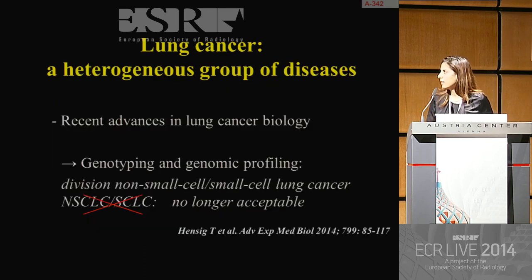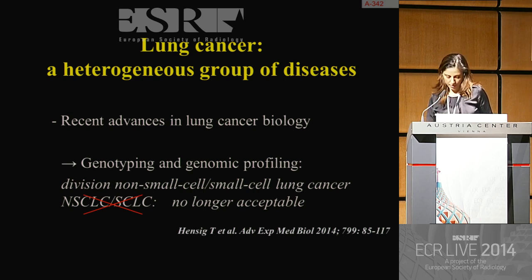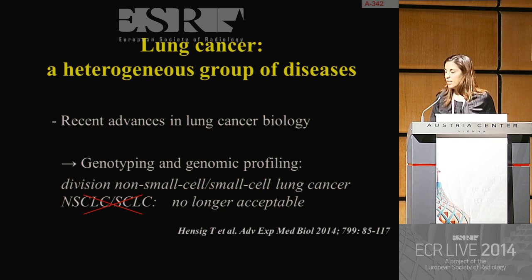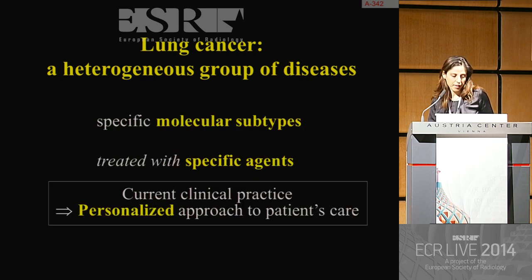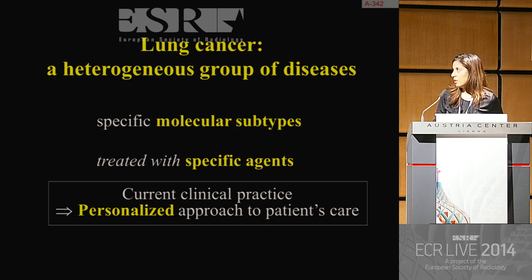Recent advances in lung cancer biology have allowed the arrival of genotyping and genomic profiling. Therefore, the simple division of lung cancer into non-small cell and small cell lung cancer is no longer acceptable, and we should consider lung cancer as a heterogeneous group of disease to treat. In fact, there are specific molecular subtypes of lung cancer treated with specific agents.